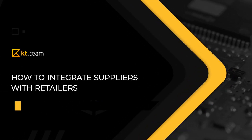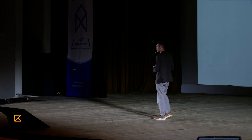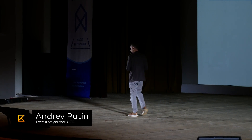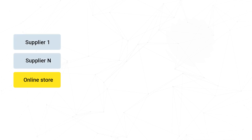How to integrate suppliers with retailers. Let's do a simulation together. Imagine that we have an online store — we're retailers — and we have a certain number of suppliers from whom we get the actual goods in stock and the prices. How will we do this integration?